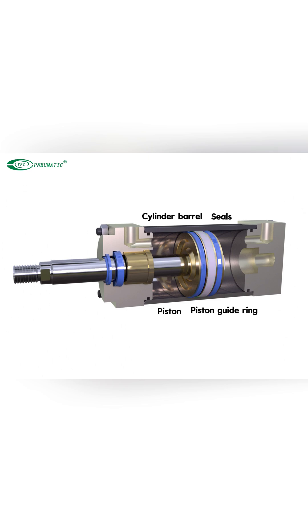If the adjustable cushioning screw is loosened during transportation of the cylinder with cushioning, adjust the cushioning to a minimum during trial operation. Gradually loosen the cushioning screw until satisfactory results are achieved to avoid excessive impact damage to the cylinder.